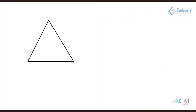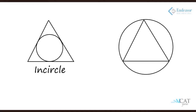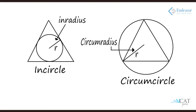There is something called an inradius and a circumradius, and similarly an incircle and a circumcircle. For any triangle, there is a circle possible within the triangle that touches all three sides — touching but not crossing, meaning it meets each side at only one point. Such a circle inside the triangle is called the incircle. There is another type of circle that touches all three vertices of a triangle; that is called the circumcircle. The radius of the incircle is called the inradius, and the radius of the circumcircle is called the circumradius.